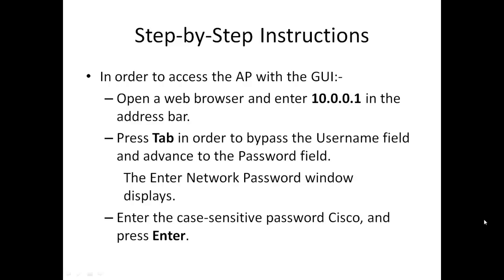After configuring the IP address, we can access the access point through the browser to configure it so that it will start accepting client association requests. Open a web browser and enter 10.0.0.1 in the address bar. Press Tab to bypass the username field and advance to the password field. Enter the password 'Cisco' with a capital C and press Enter.